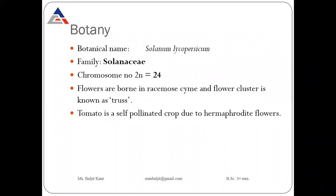Firstly, the botany of tomato. The botanical name of tomato is Solanum lycopersicum and it belongs to family Solanaceae. The chromosome number of tomato is 2n = 24 and the flowers of tomato are borne in a racemose cyme. The flower cluster is known as truss, so the flower cluster of tomato is known as truss.